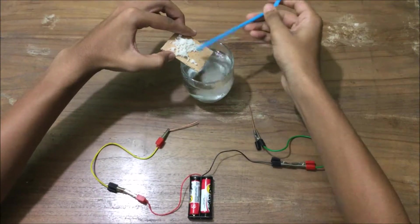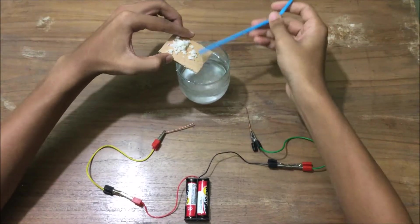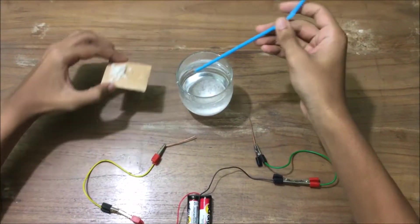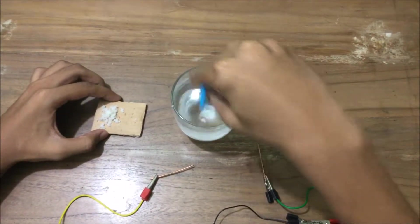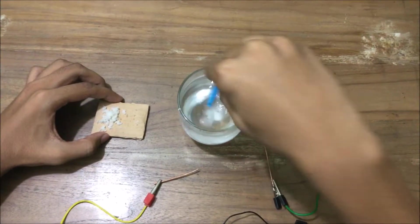Now we will perform electrolysis by ourselves. Take a clean glass. Fill two-thirds of it with water. Now add two to three spoons of salt to it. Stir it very well.